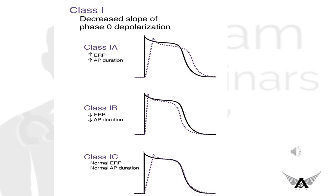Class 1 has three subclasses: 1a, 1b, and 1c. Class 1a drugs have a moderate effect at blocking sodium channels and also a moderate effect at blocking potassium channels; they take 1 to 10 seconds. Because of this potassium channel blocking property, Class 1a drugs increase the action potential duration and thus increase the effective refractory period.